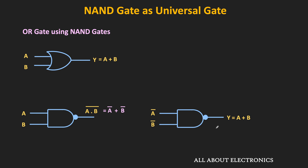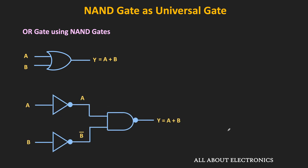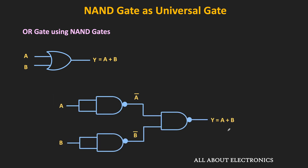So now, this A bar and B bar signal can be generated by passing inputs A and B through inverters. So let us replace those inverters with the equivalent NAND gate implementation. This is the equivalent NAND gate implementation of the OR gate.